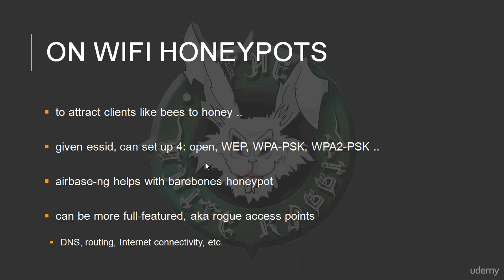You might have heard of the term honeypot. For Wi-Fi honeypots, we're talking about something that attracts clients to do a certain behavior — just like honeypots attract bees. In this case, it's a fake access point that attracts clients to associate and perhaps send ARP responses. Sometimes, if we don't know what kind of authentication is being used, we can set up multiple honeypots — for example, four different honeypots with open, WEP, WPA-PSK, and WPA2-PSK for the same ESSID — and see which one the client associates with. We have seen how AirBase-NG can help with a bare-bones honeypot.